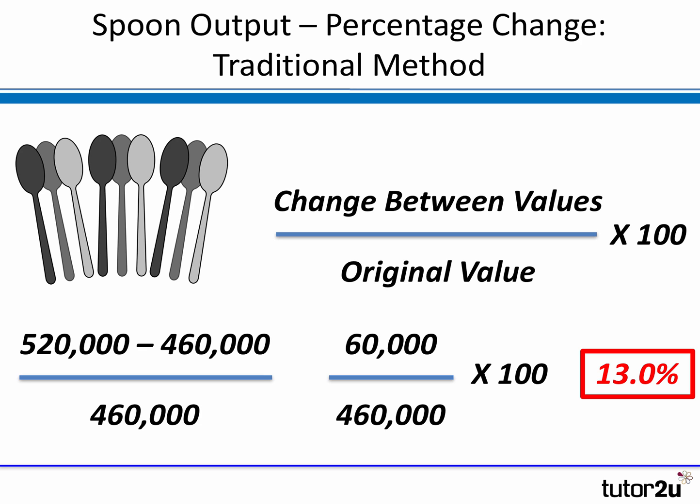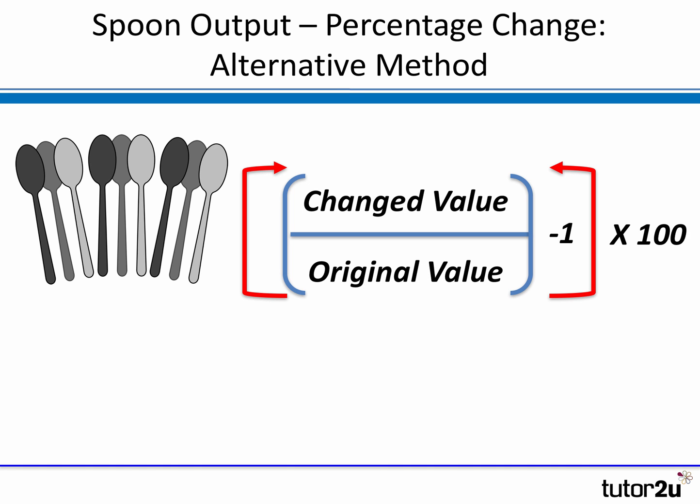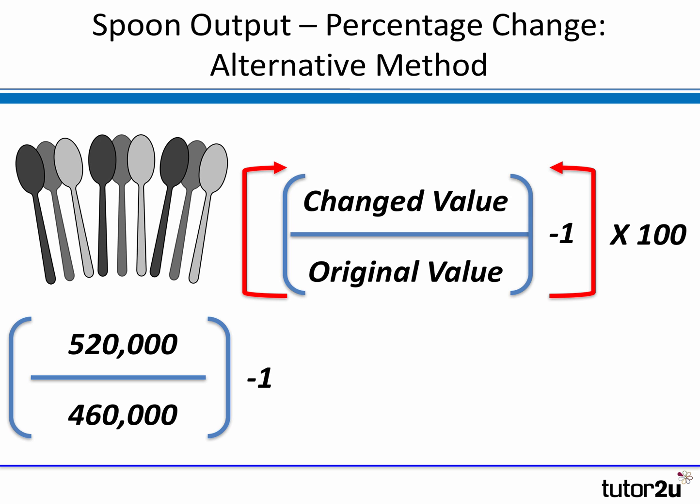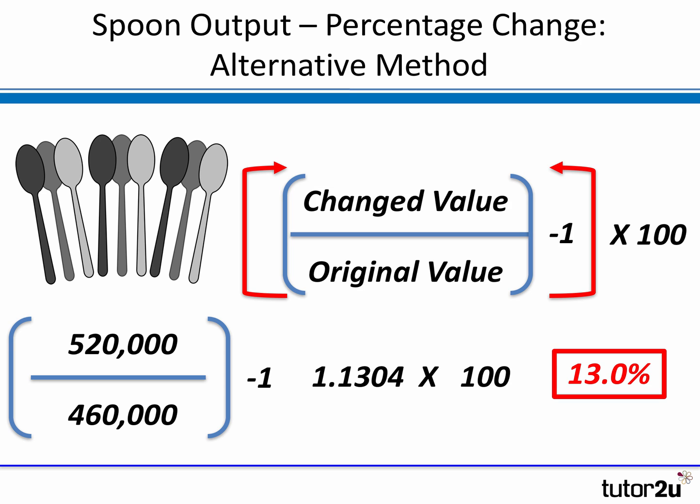We can use the same data to try the alternative method just to show it also works. In this case, the alternative method is to simply divide the new value by the original value, take away one, and then multiply by 100. So the changed value — the new value — was 520,000 spoons, and the original value last month was 460,000. Divide one by the other, take away one, then times by 100. You can see the result is more than one: it's 1.1304, times by 100, and rounding to one decimal place, there we are again — 13.0% increase. So either method is fine, as long as you understand how they're calculated and build your confidence in calculating the percentage change.